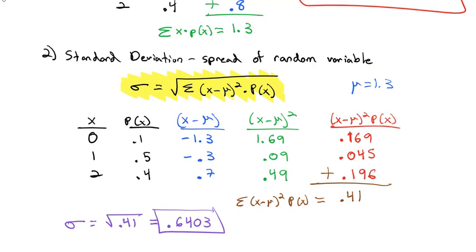So now we know our probability distribution function. That table that we made has an average expected value of 1.3 and a standard deviation of 0.6403. So that's what we're looking at today is we're taking a look at how to work with these probability distribution functions, specifically the discrete ones.